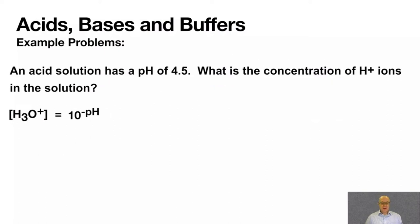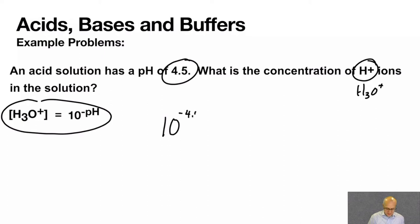Here's another example. In this example, we have the pH of the solution, and we want to know the concentration of H plus ions, or hydronium. H plus and hydronium are often used interchangeably. So we know that the concentration of hydronium is 10 to the negative pH. We know the pH is 4.5. So literally, it's 10 to the negative 4.5.